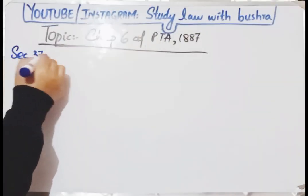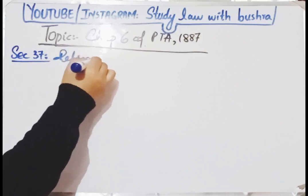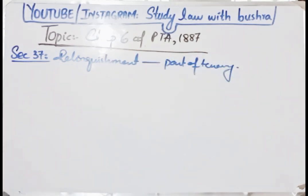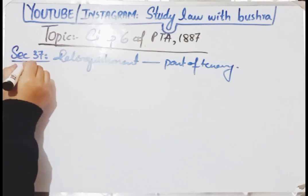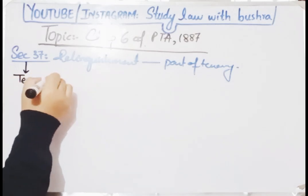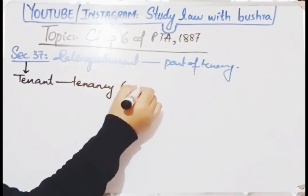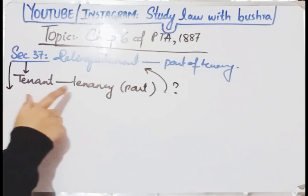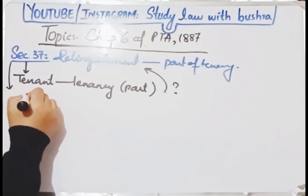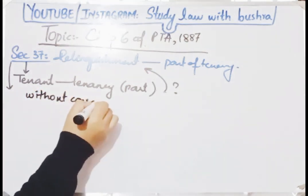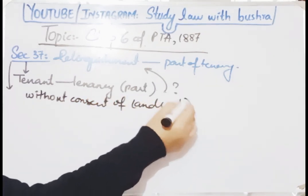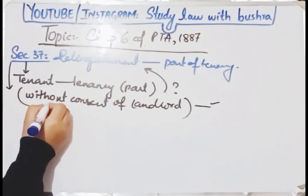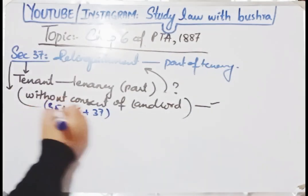Section 37 baat karta hai relinquishment of the part only of the tenancy. Ye section kehta hai ke agar tenancy ka kuch hissa tenant relinquish karna chahta hai aur baaki hisse par wo cultivation kar raha hai, to aise soorat mein use landlord ki consent leni zaroori hai. Without the consent of the landlord, wo tenancy ka kuch hissa relinquish nahi kar sakta.